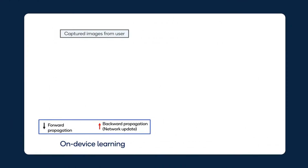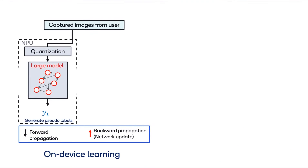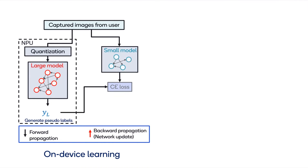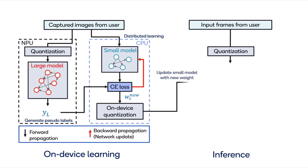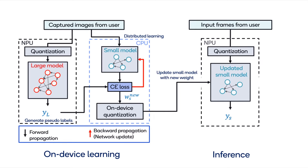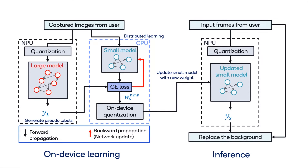We apply on-device post-training quantization and update the small model for inference. This updated model can produce accurate human segmentation masks like large models and successfully replace the background in a video call.